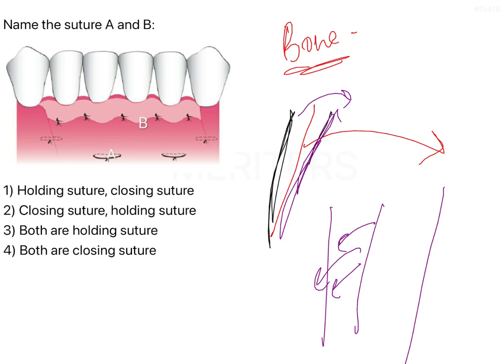Such sutures are given in a transverse direction and these are called holding sutures. They hold the periosteum to the bone, which is why they are called holding sutures.